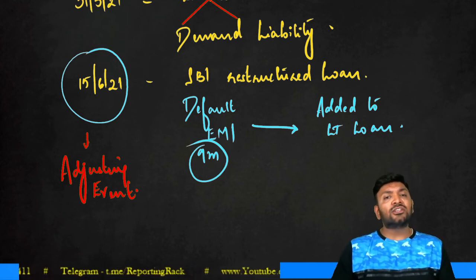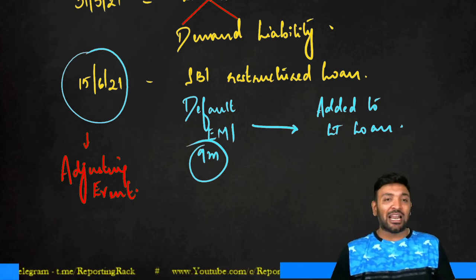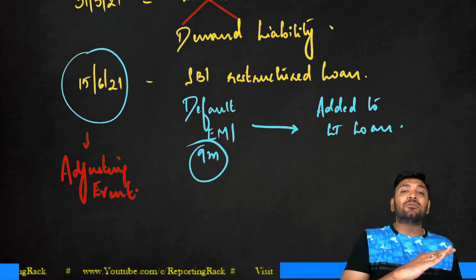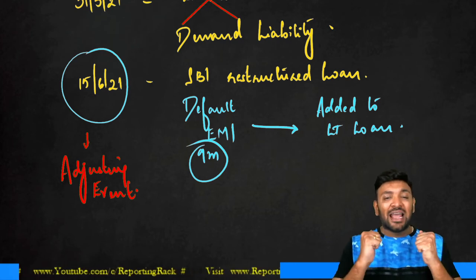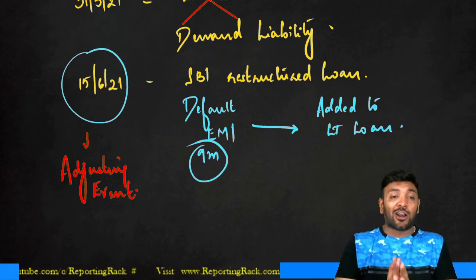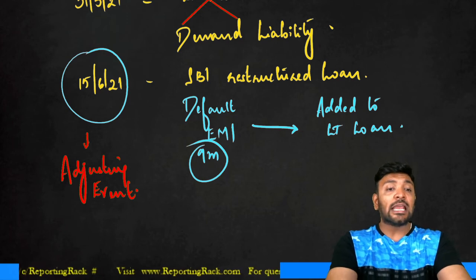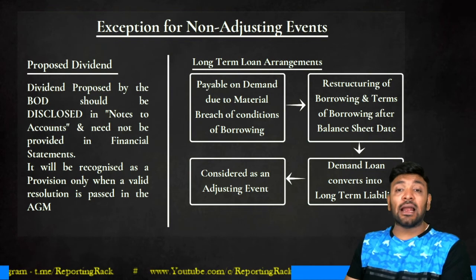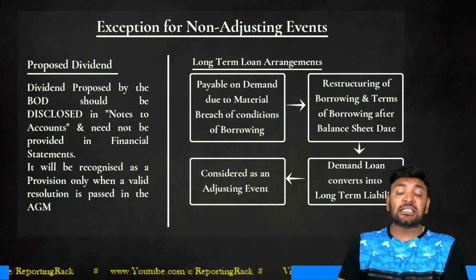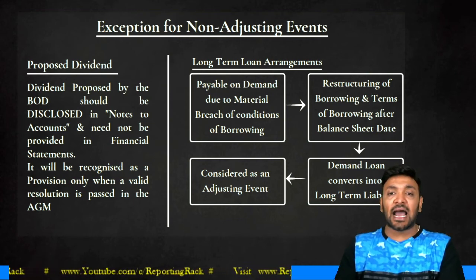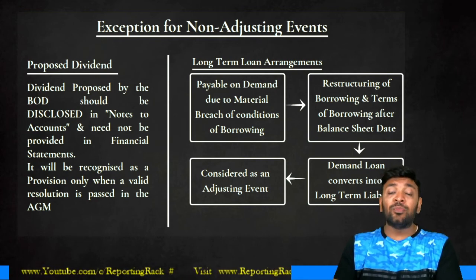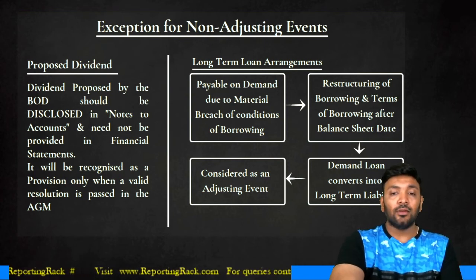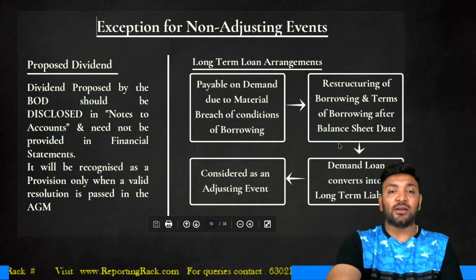The reason is: on 31st March 2021 you would show it as a demand liability due to the default, but on 31st March 2022 it again becomes a long-term non-current liability. This creates a lack of comparability and confusion for the user about whether the loan is current or non-current. To eliminate this confusion, the standard states that whenever a long-term loan becomes payable on demand due to breach of borrowing conditions, and the loan is subsequently restructured after the balance sheet date such that it reverts to a long-term liability, it should be treated as an adjusting event on the balance sheet date — even if restructuring happens after board approval.